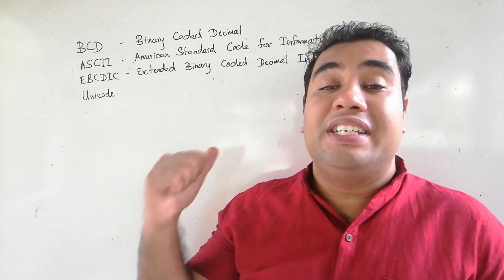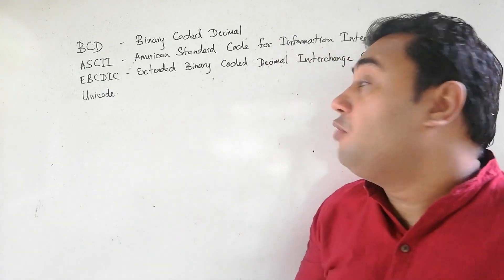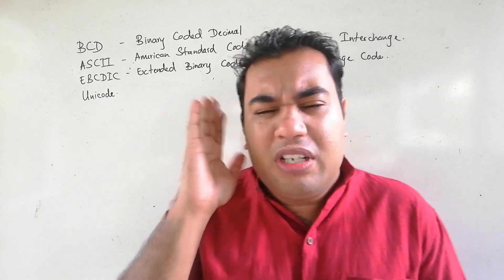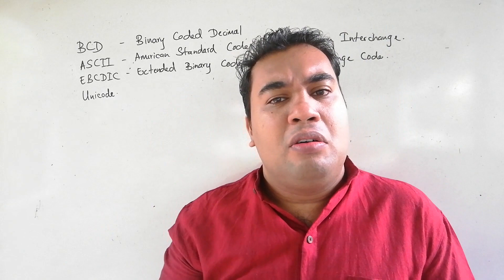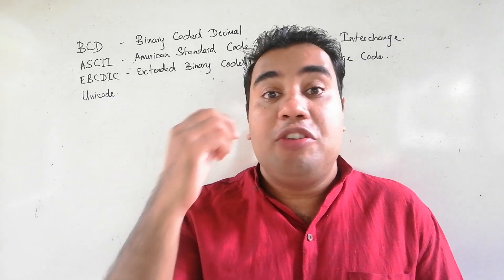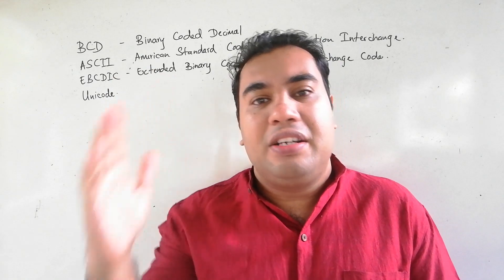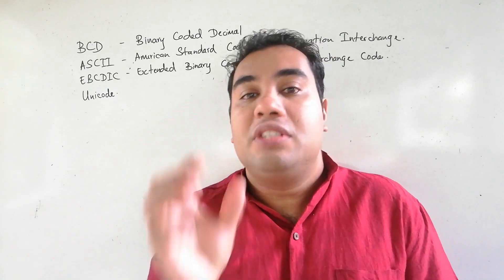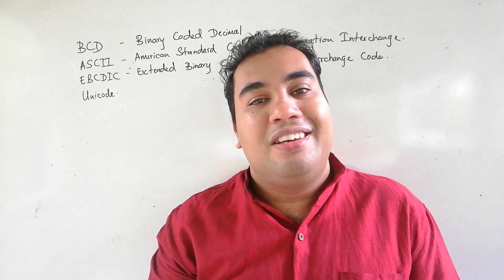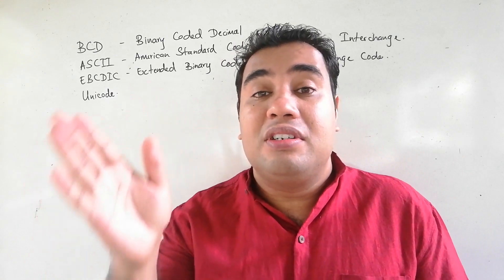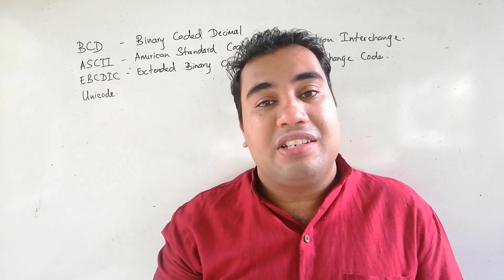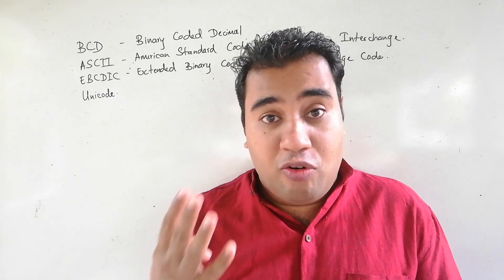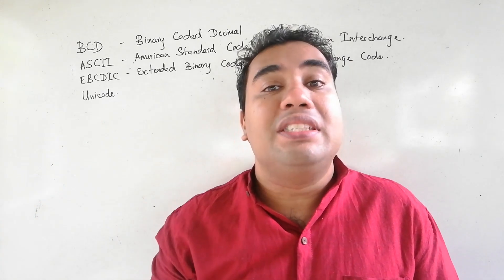Now let's see each of these coding systems individually. First let's see what BCD is — Binary Coded Decimals. What does it mean? What do you understand when you hear the words Binary Coded Decimals? It simply means you code decimal values using binary data. It converts decimal values to binary by representing each decimal digit using exactly four bits.